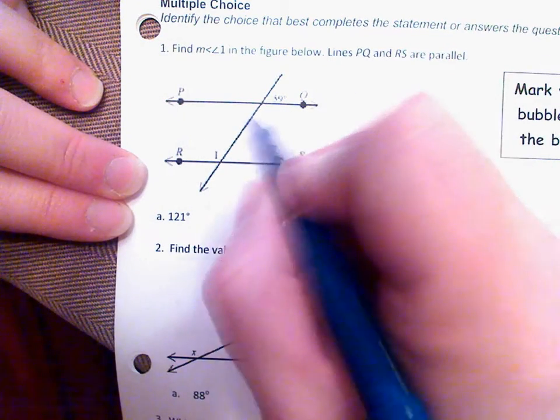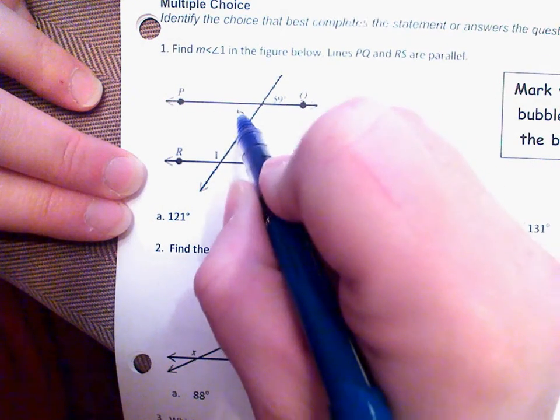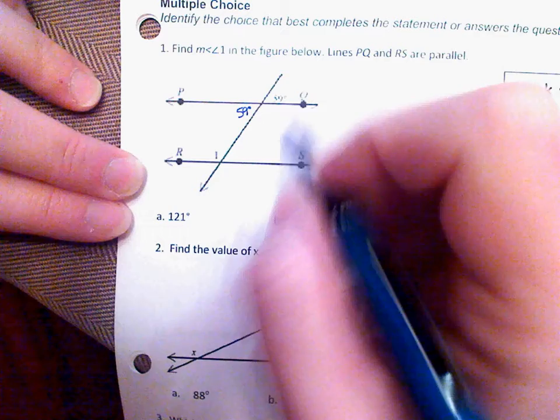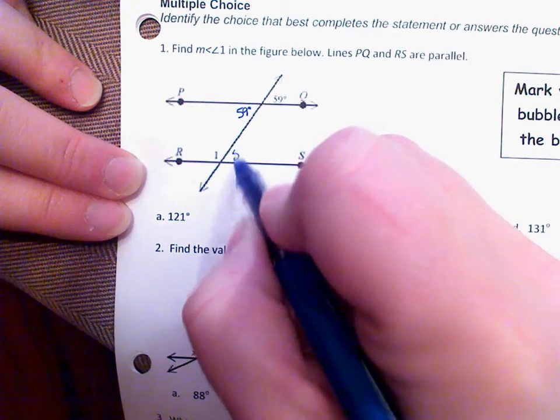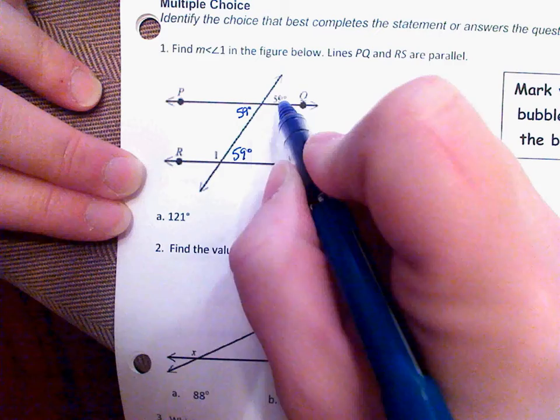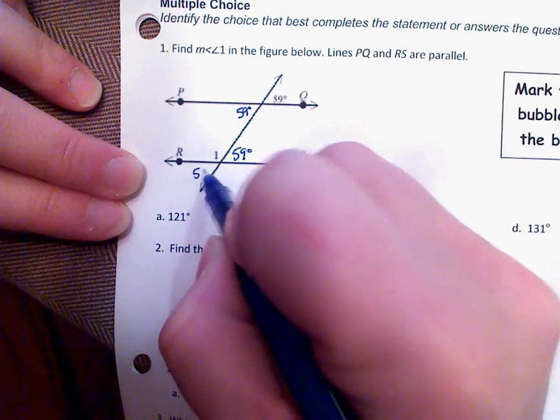We know that vertical angles are always congruent whether we have parallel lines or not. But when we have parallel lines, we know the alternate interior angles are congruent. We know alternate exterior angles are congruent.